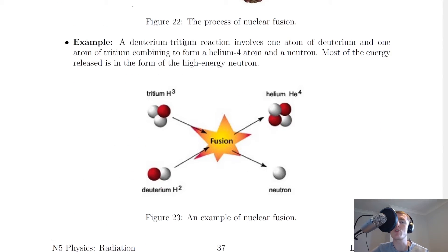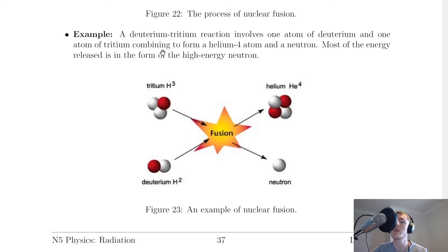Here's an example as well, which is a deuterium-tritium reaction that involves one atom of deuterium and one atom of tritium combining to form a helium-4 atom and a neutron. There's your deuterium, which is hydrogen-2, and your tritium, which is hydrogen-3, and when these fuse together they form helium-4 and a neutron. Most of the energy released is in the form of the high-energy neutron, which carries away most of the energy in the form of kinetic energy.